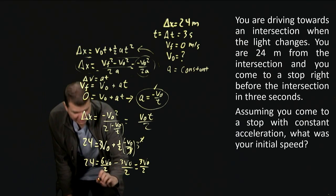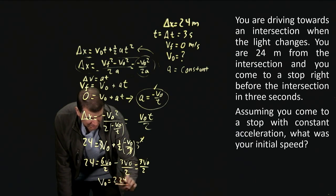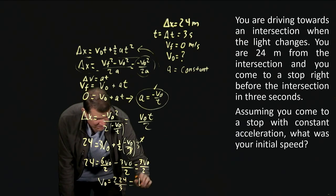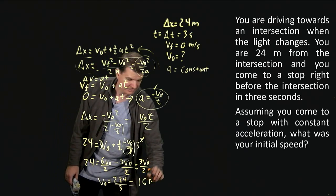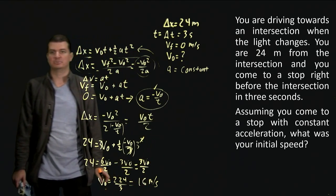So six minus three leaves me with three v zero over two. So that tells me that v zero is two times twenty four divided by three, which sounds remarkably familiar because that's exactly what we did a moment ago. And that's the sixteen meters per second.